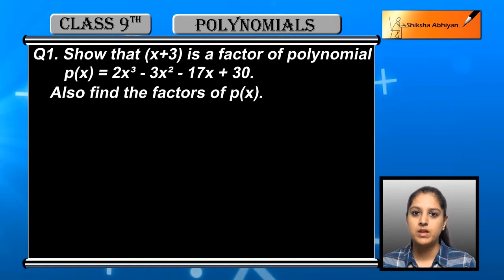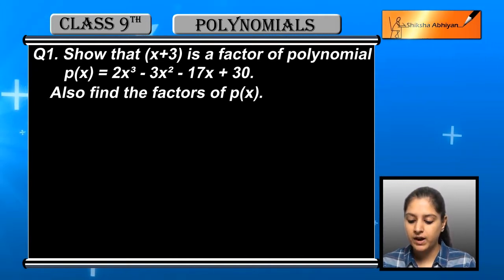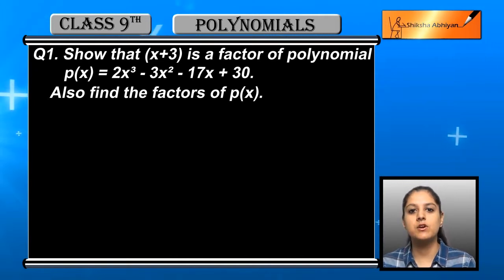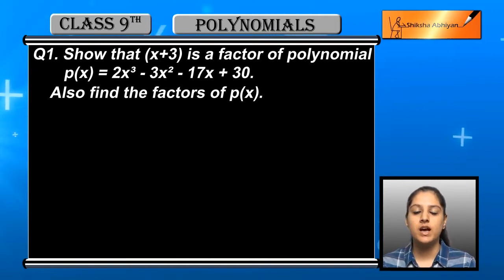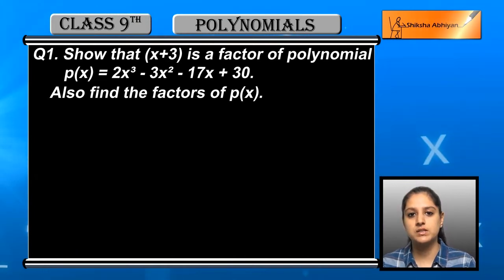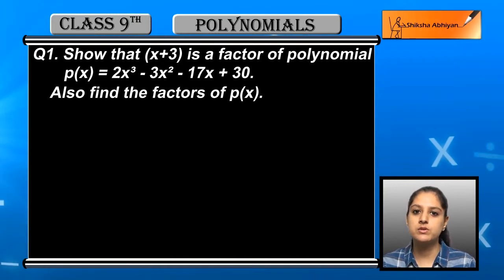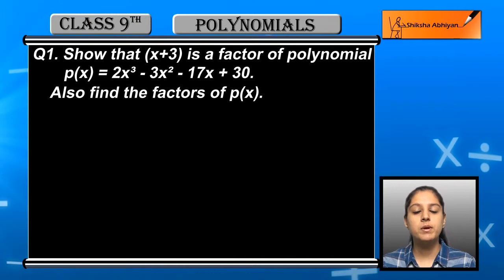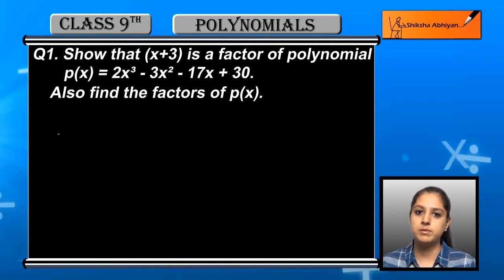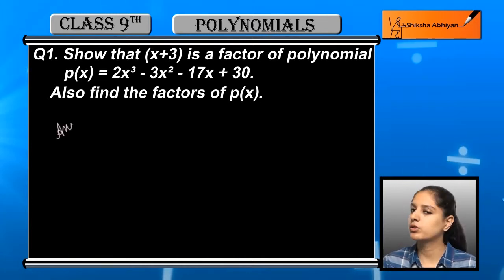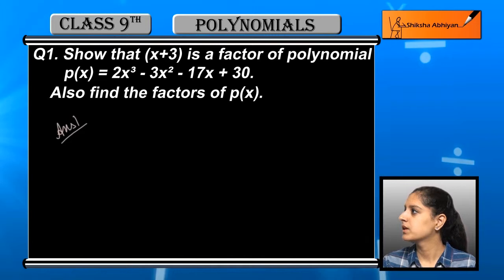उसके बाद ये show करने के बाद, we have to find the factors of p(x). अगर हमने ये show कर दिया that x plus 3 is a factor of p(x), so इसका मतलब कुछ और factors भी होंगे उसके। तो हमें complete factors निकालने हैं p(x) के। So let us see how we are going to proceed.